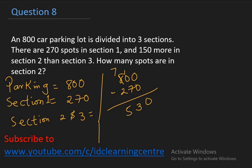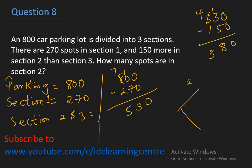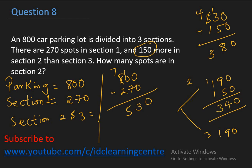Section two has 150 more spots than section three. Remove the extra 150 before dividing: 530 minus 150 equals 380. Divide 380 equally between sections two and three — each gets 190. Since section two had 150 more, add the 150 back to section two: 190 plus 150 equals 340. So section two has 340 spots.